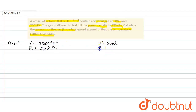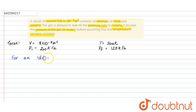Now, as we know for an ideal gas, we have the ideal gas equation: PV = nRT.